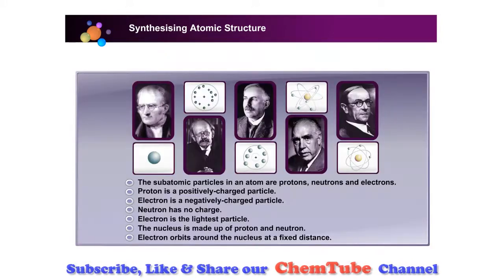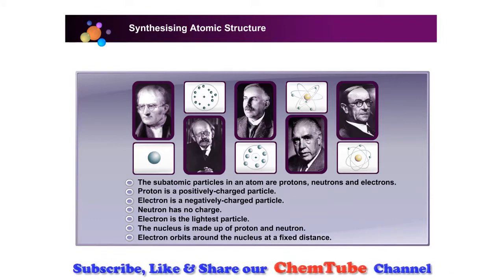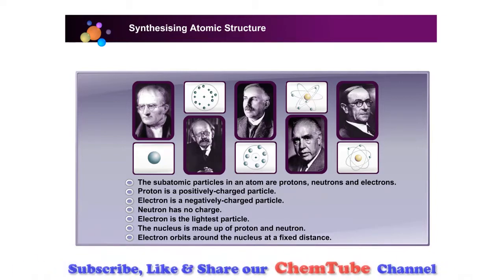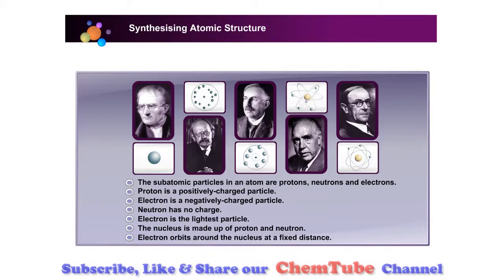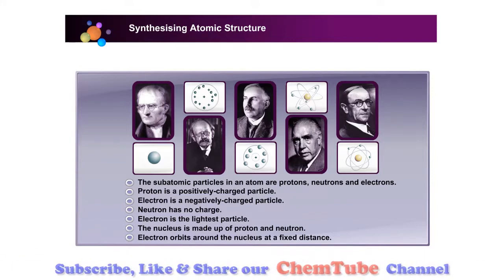In this lesson, you have learnt about synthesizing atomic structure. You have learnt that the subatomic particles in an atom are protons, neutrons, and electrons. Proton is a positively charged particle. Electron is a negatively charged particle. Neutron has no charge. Electron is the lightest particle. The nucleus is made up of protons and neutrons. Electrons orbit around the nucleus at a fixed distance.